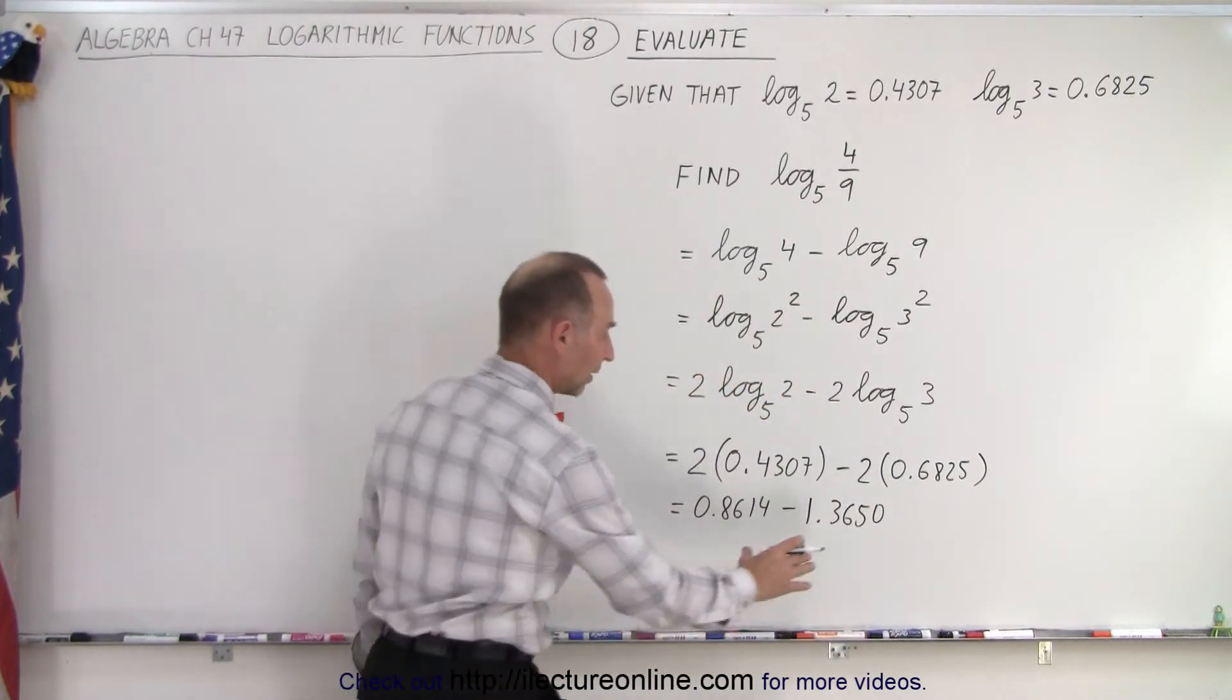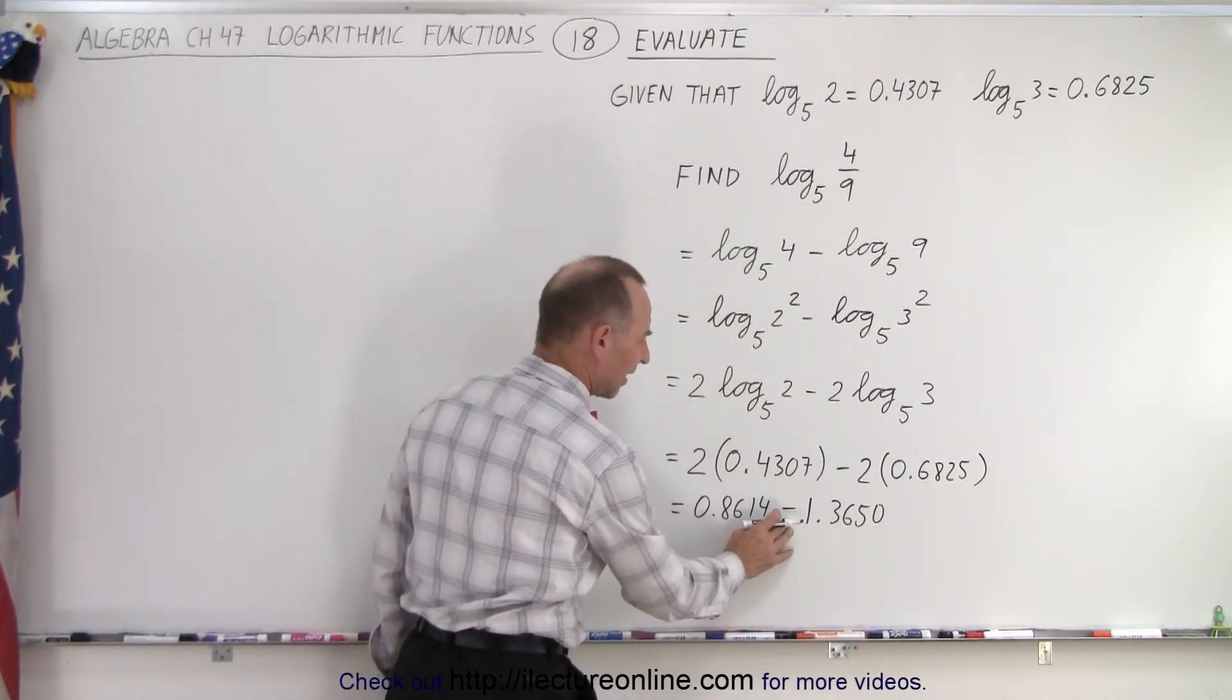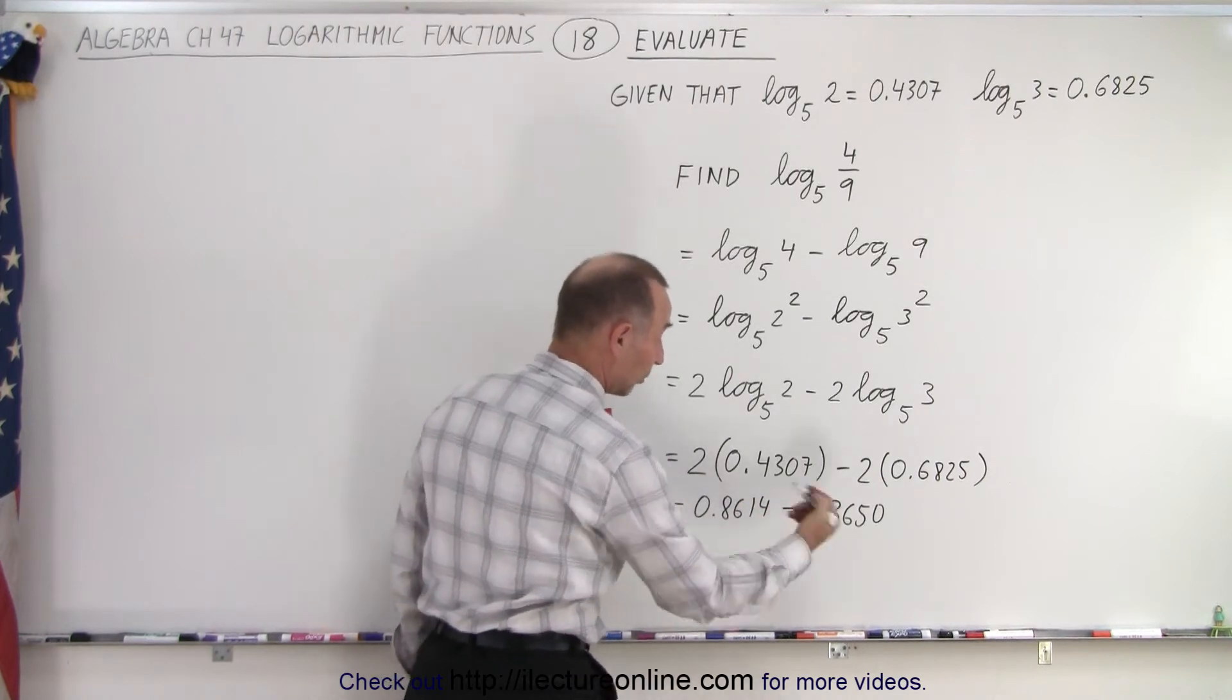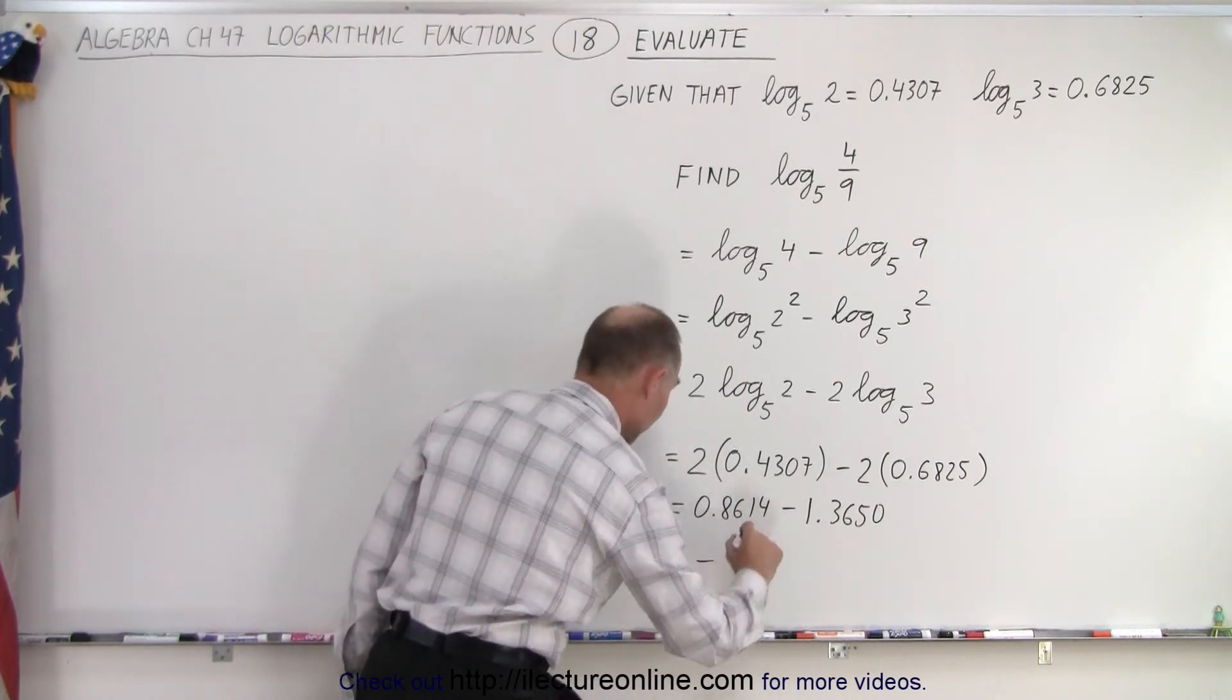So this gives us 0.8614 minus the product of that would be 1.3650. And now we have to subtract this from this, but this has a minus sign. So let's subtract this from that and put a minus sign in front.